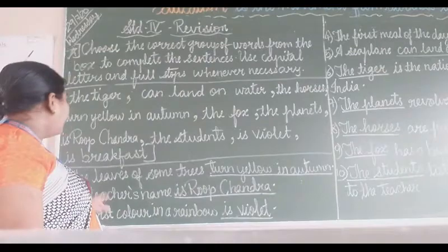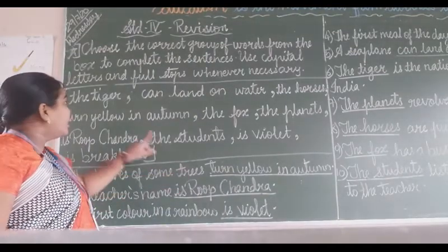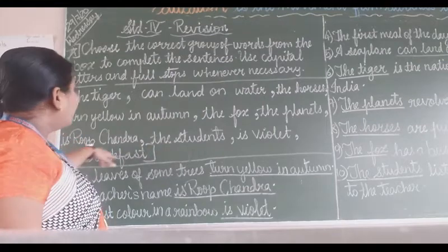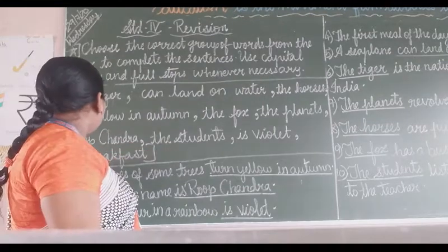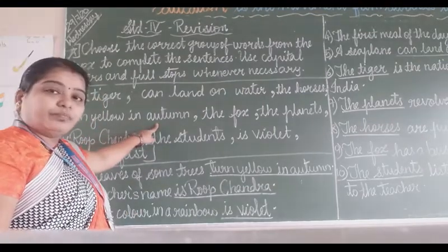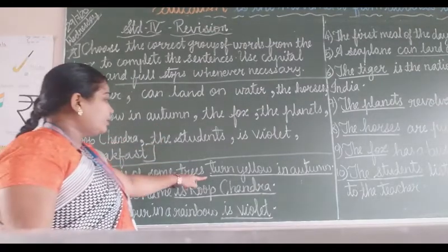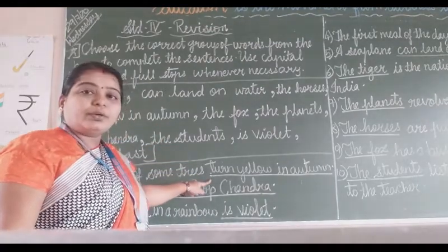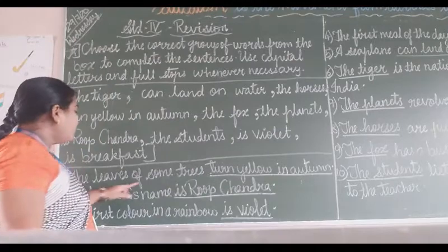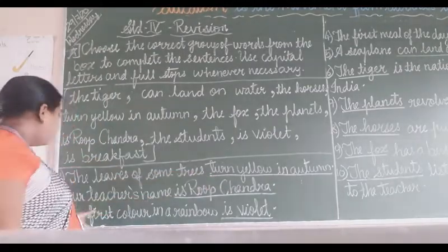Here, the sentence is 'the leaves of some trees.' The correct answer is 'turn yellow in autumn.' So the complete sentence is: The leaves of some trees turn yellow in autumn.